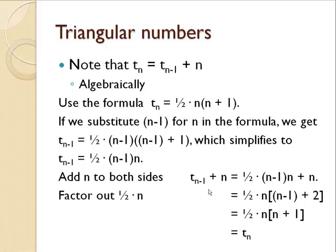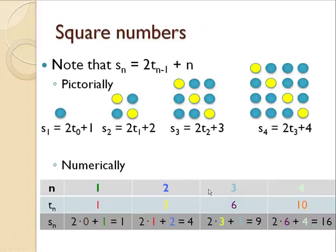With square numbers, I want to note that a square number is 2 times the previous triangular number plus n, the index.